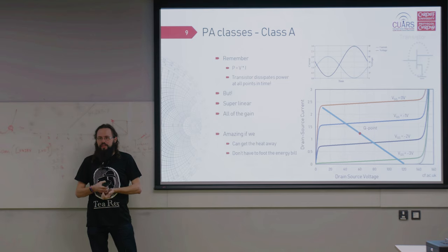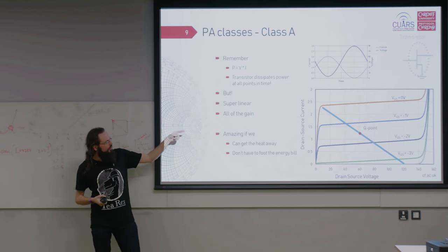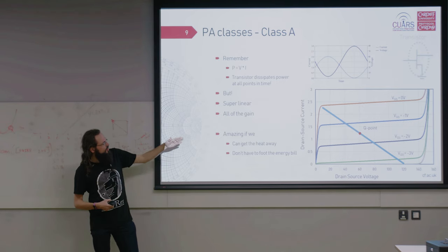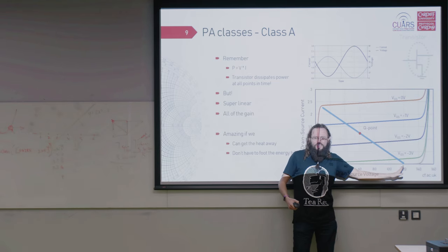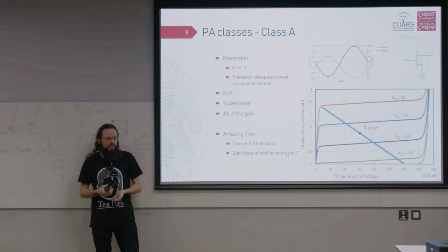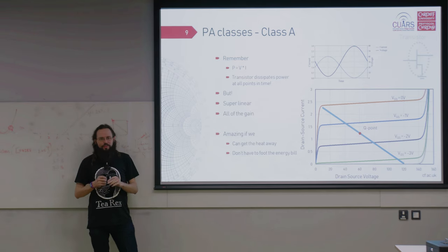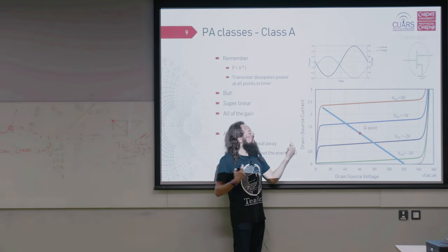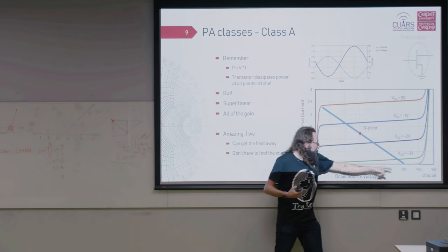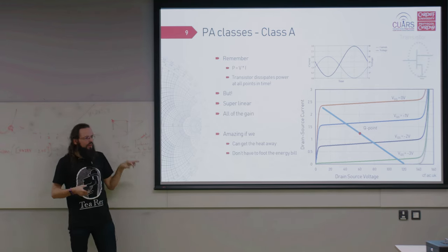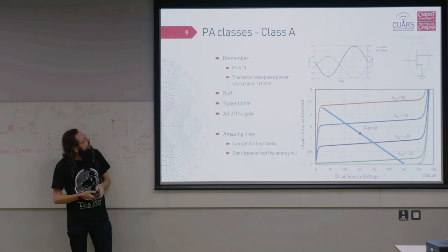There's multiple PA classes, and the easiest one is a class A, where the load line I showed earlier, you get that. Basically start in the middle, just as you up the power, it goes up and down further and further, until it reaches the breakdown. You don't want to go quite to the breakdown voltage, but you want to get in the area to get the most of the power out of this, and you want to get the highest current. The good thing about that one is it's super linear. It's perfect if you want linear transmission and you get all of the gain. The downside is it's a bit inefficient because with P equals V times I, there's no point apart from this tiny bit down here where no current is consumed, well, no power is dissipated in the transistor. So it's amazing if you can get the heat away and if you don't have to pay for the energy bill.